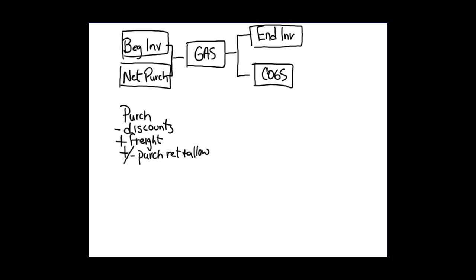Here's a quick demonstration. Say we have $3,000 left at the end of last year — that becomes our beginning inventory. During the year we purchased $30,000 worth of goods, so altogether we have $33,000 available for sale. If we do a physical count and find $4,000 worth of goods in the store, then $29,000 must have been sold as cost of goods sold, because both figures must add up to $33,000.